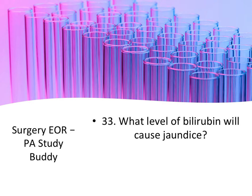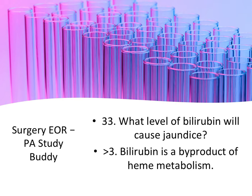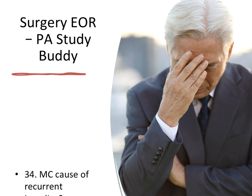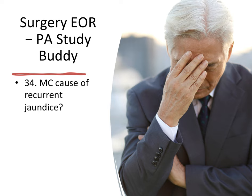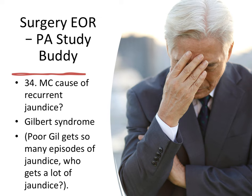What level of bilirubin will cause jaundice? They'll give you a stem with different bilirubin levels and ask at what level a patient would experience jaundice — that would be greater than 3. Bilirubin is a byproduct of heme metabolism, so greater than 3 causes jaundice. Most common cause of recurrent jaundice: they'll tell you the patient has had three episodes of jaundice in the last year — the most common cause is Gilbert syndrome. Remember: poor Gil gets so many episodes of jaundice — Gilbert syndrome.